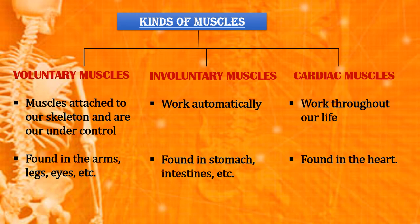Involuntary muscles or smooth muscles are not under our control — they work automatically. They are found in our stomach and intestine. For example, respiration, circulation and digestion. Cardiac or heart muscles are found in the heart. They are involuntary and work throughout our life without stopping or getting tired.